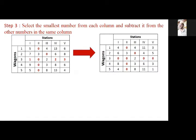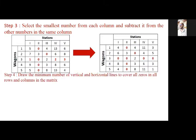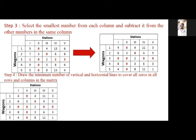Now the next and the important step: draw the minimum number of vertical and horizontal lines to cover all zeros in all rows and columns. The word 'minimum' is the most important word here — you have to draw it in the minimum number of lines. So we have this matrix; let us say I am drawing 1, 2, 3, 4 and 5 — all 5 verticals.